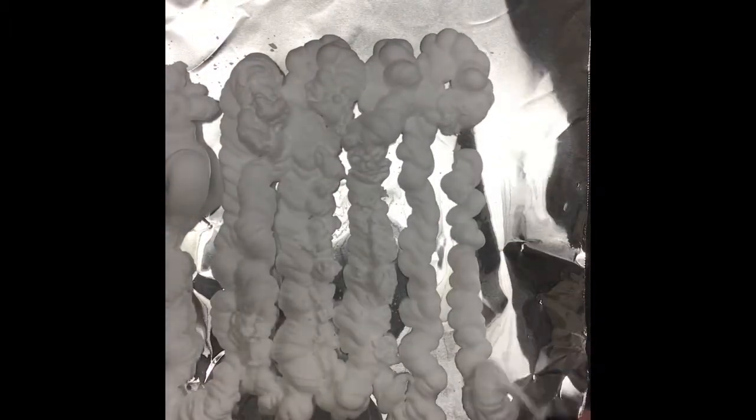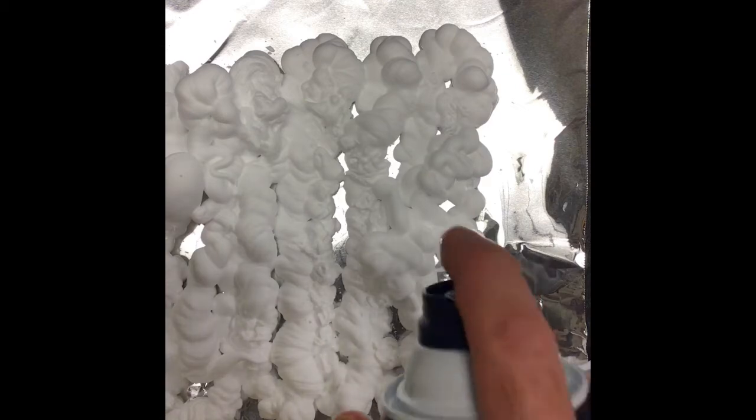This is a fun part right here. I'm going to put shaving cream on the aluminum foil and cover it up about an inch thick. Sometimes I have to hold the can upright. If I hold it like this, it'll shoot air, so if I hold it kind of vertical, it will work better. It smells good.